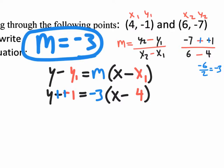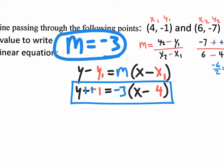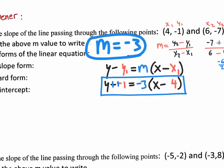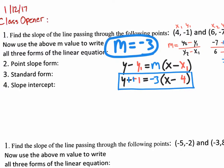And that right there is another point, because that's what they're asking for — point slope form. Going back to the question, point slope form — there it is.